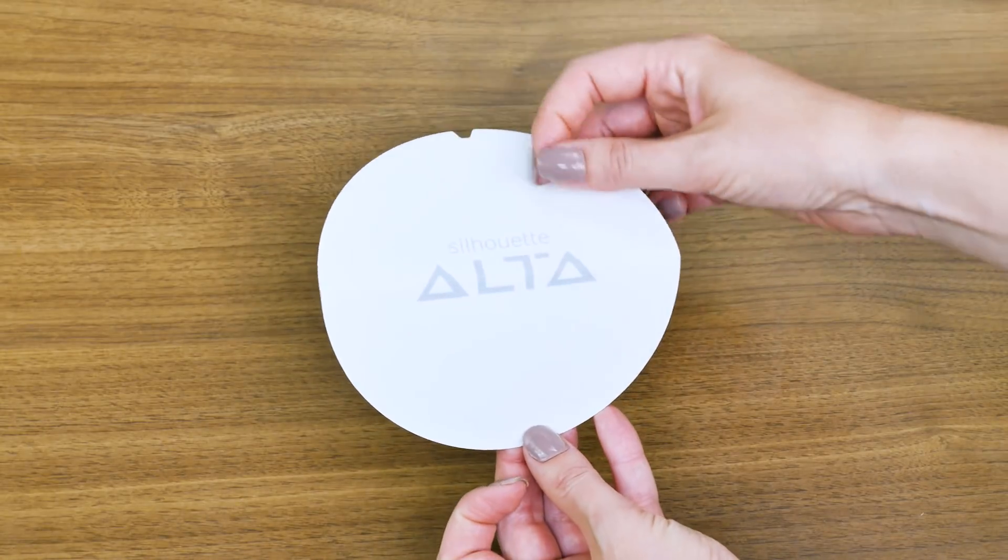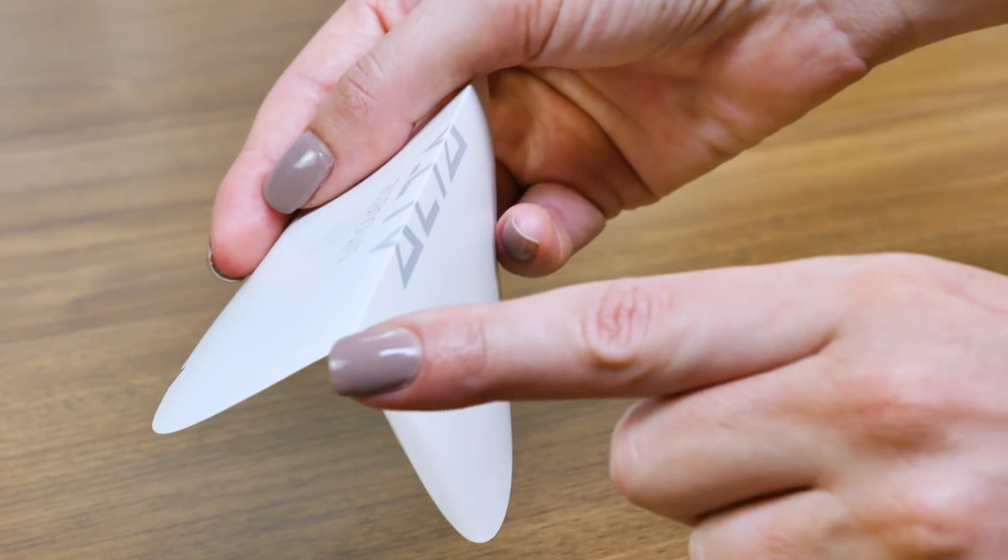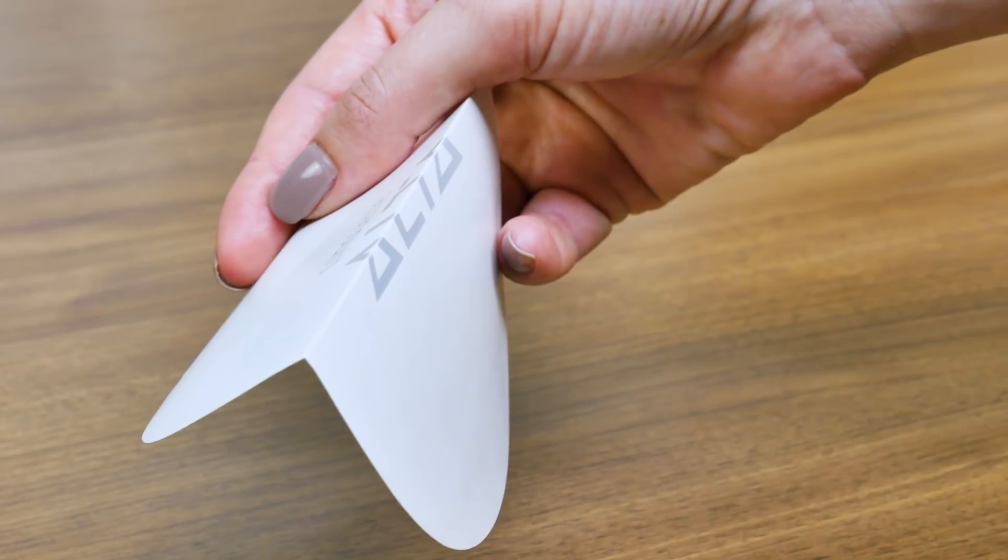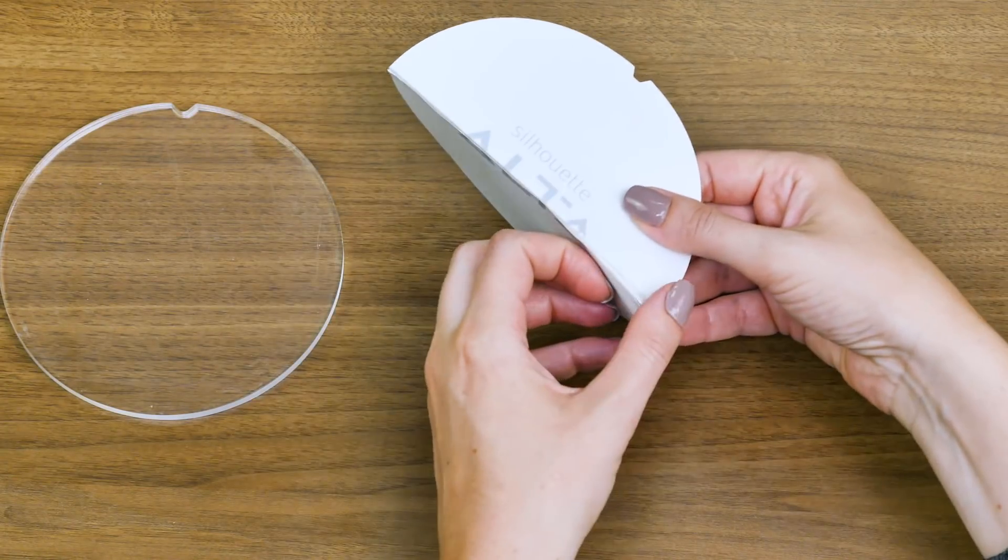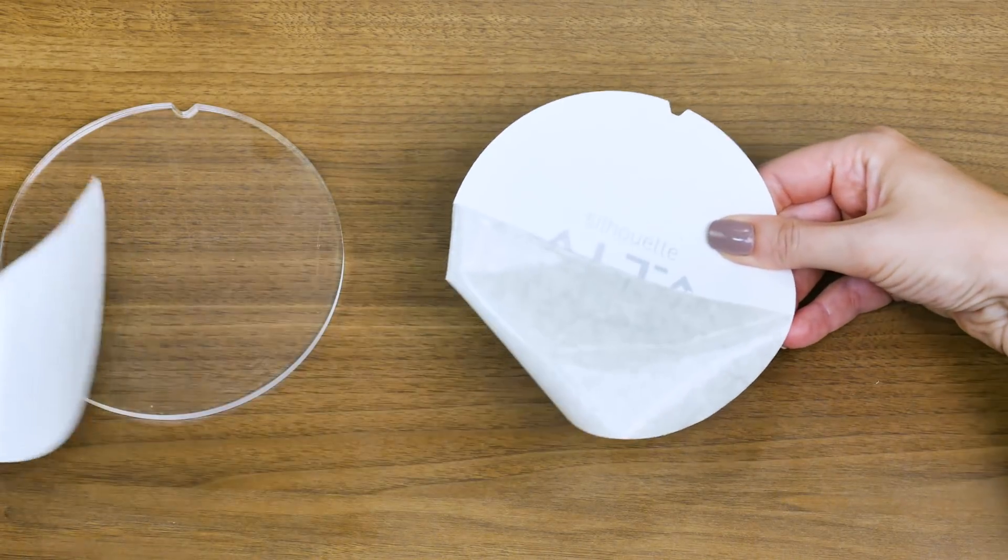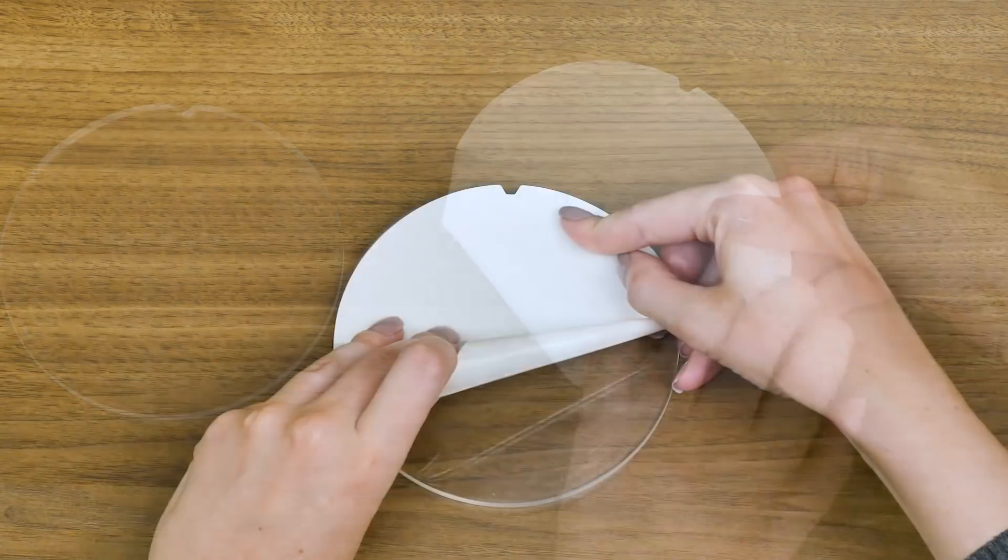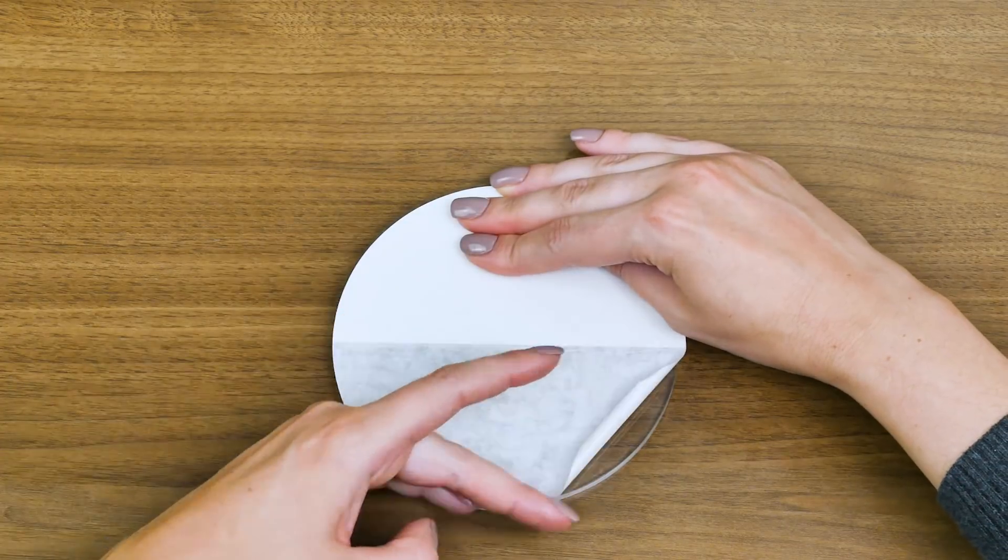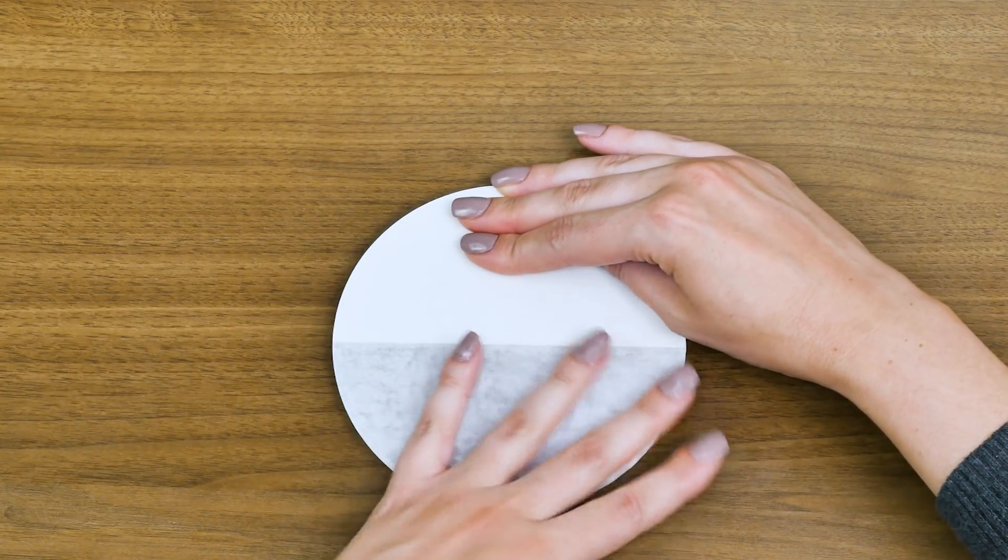The liner for the platform tape is perforated down the middle to make it easier to apply. Start by taking off the liner half without the notch and line up the top half of the platform tape with the liner still on.